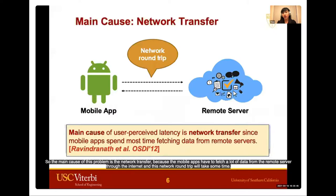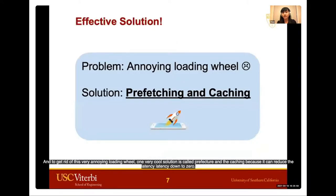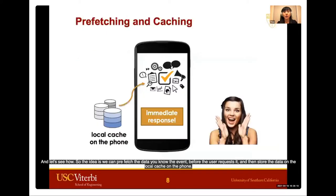The main cause of this problem is network transfer, because mobile apps have to fetch a lot of data from the remote server through the internet, and this network round trip takes time. To get rid of this annoying loading wheel, one very cool solution is called prefetching and caching, because it can reduce the latency down to zero.